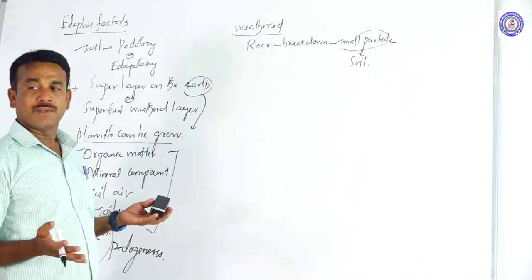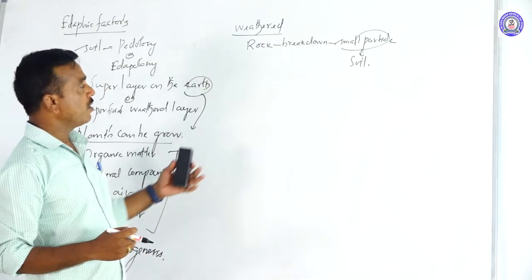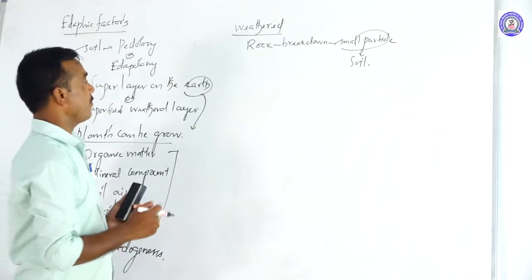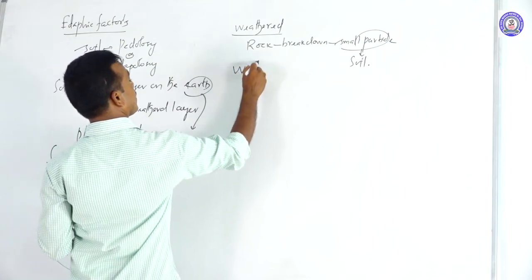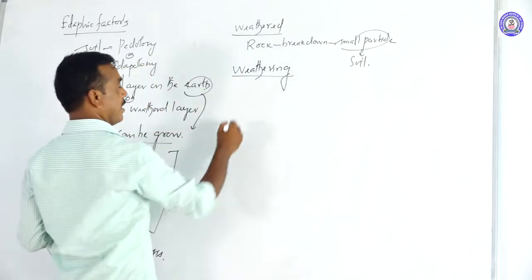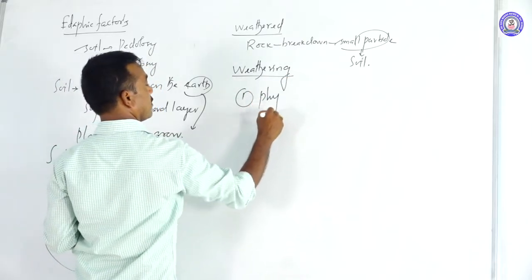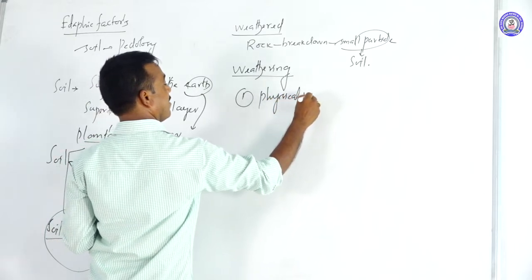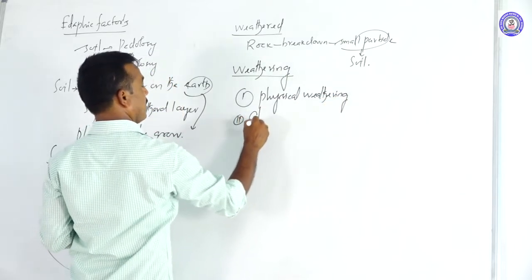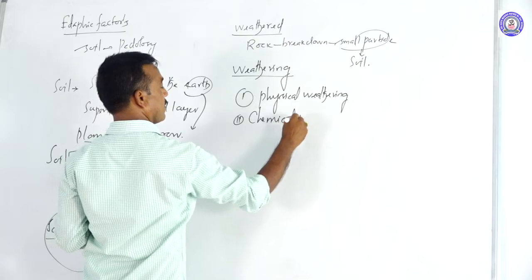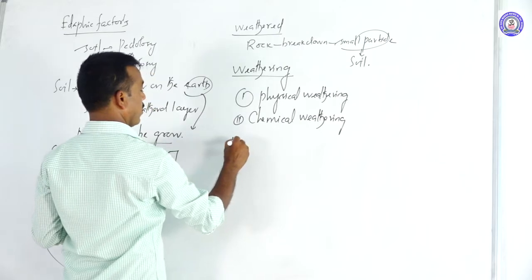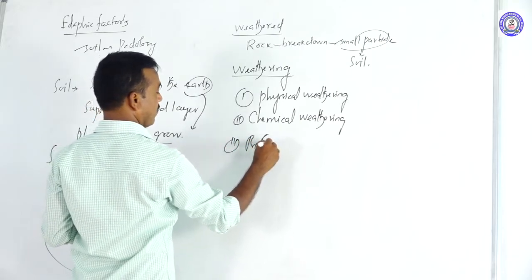Rock is broken down, resulting in the formation of small particles. There are three kinds of weathering: namely, physical weathering, chemical weathering, and biological weathering.